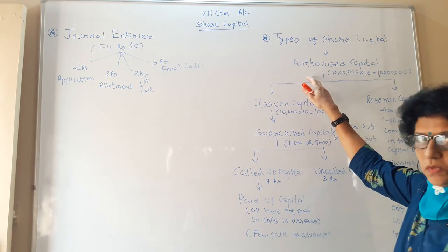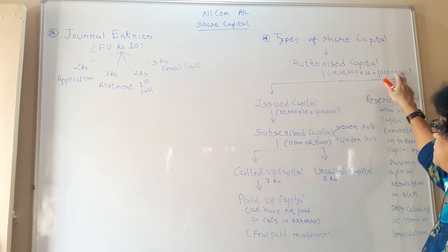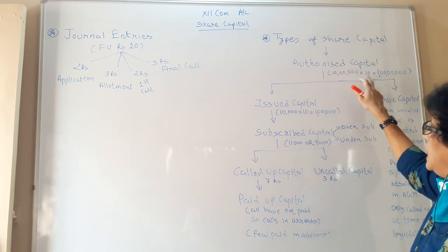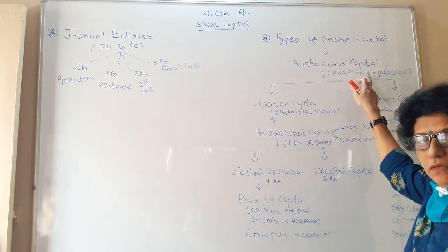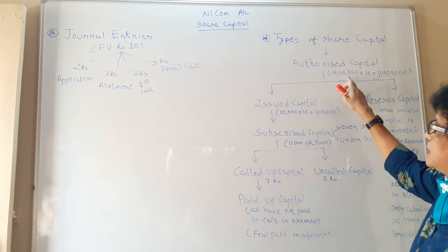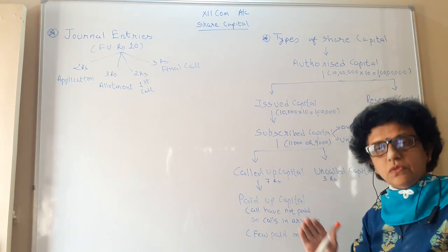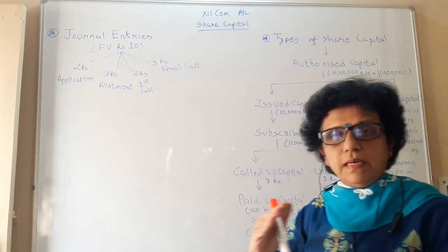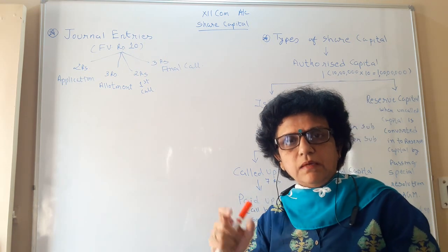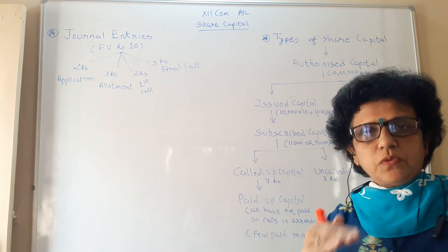That is the maximum amount. For example, suppose the company has estimated 1 crore as the authorized capital. So authorized capital is 1 crore and the face value of the share is 10 rupees. If you divide 1 crore by 10, you get 10 lakh equity shares to be issued by the company during its lifetime. That is the authority the company has acquired.